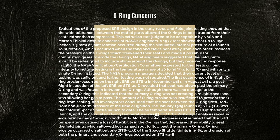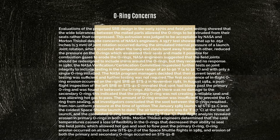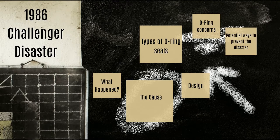The January 1985 launch of STS-51-C was the coldest space launch to date. The air temperature was 62 degrees Fahrenheit at launch, and the calculated O-ring temperature was 53 degrees. Post-flight analysis revealed erosion of the primary O-ring in both SRBs. Morton Thiokol engineers determined that the cold temperatures caused loss of flexibility in the O-rings, decreasing their ability to seal the field joints, which allowed hot gas and soot to flow past. O-ring erosion occurred on all but one shuttle flight in 1985. They knew O-rings were an issue, and yet nothing was done.